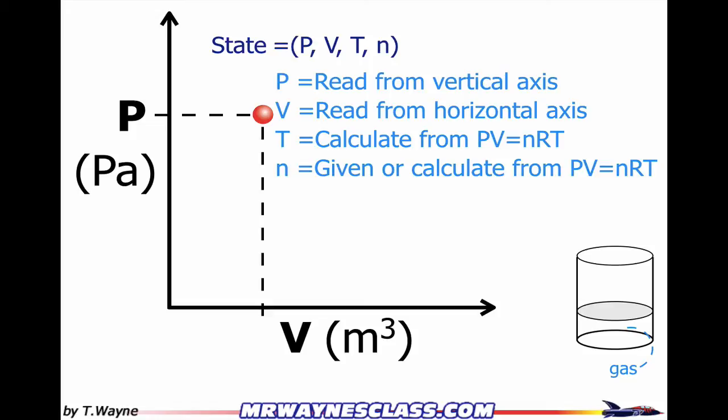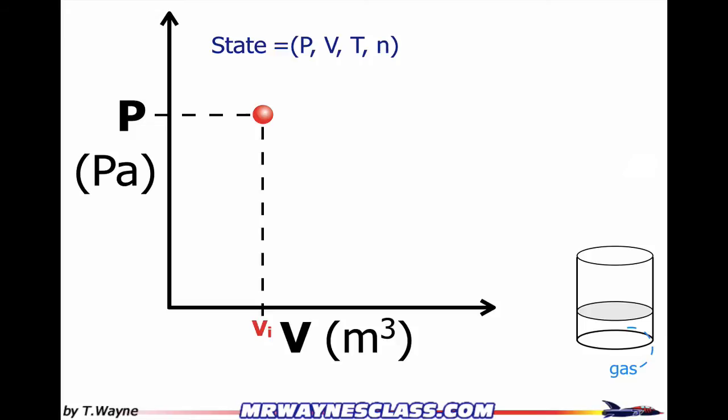Now I can do a little bit more with it. Let's call this my initial volume — so I've got this pressure and initial volume. Now look at the little container on the right, and I'll let the diaphragm or the piston go up. So the gas is expanding, it's pushing upwards, and the displacement is upwards.